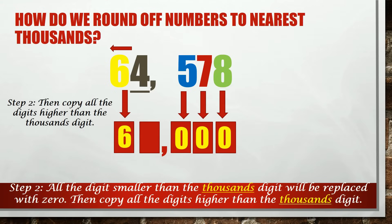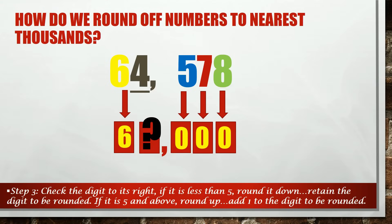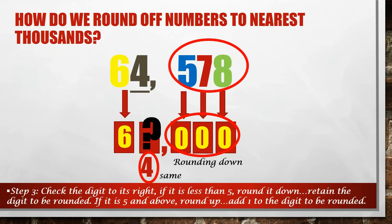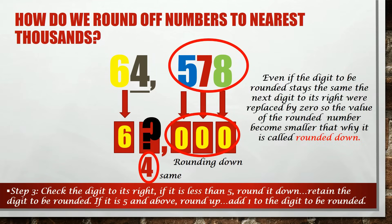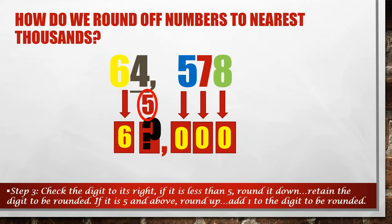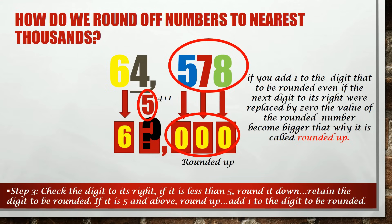Now, how about the digit that we need to round off? We can keep the digit the same, or we can increase it by 1. If we keep the digit, we are rounding down the number. Take note that even if the digit to be rounded stays the same, the next digit to its right will be replaced by 0, so the value of the rounded number becomes smaller — that's why it is called rounding down. While if you add 1 to the digit to be rounded, even if the next digits to its right are replaced by 0s, the value of the rounded number becomes bigger — that's why it is called rounding up.